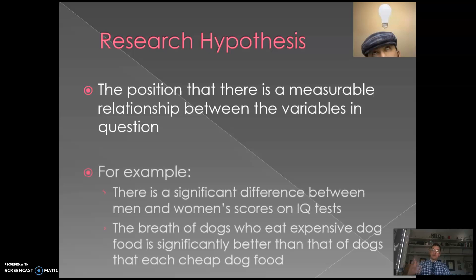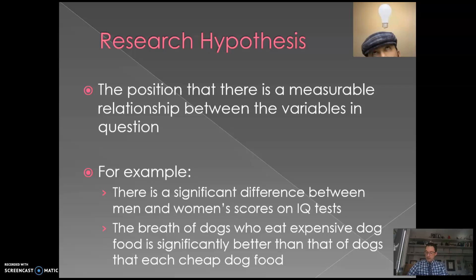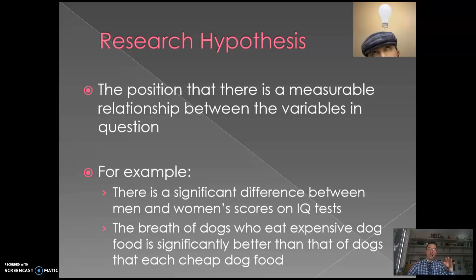For example, you might say there's a significant difference between men and women's scores on IQ tests — meaning biological sex does seem to have some impact on an individual's score on an IQ exam. This is actually a non-directional research hypothesis. You're not saying women will score higher or men will score higher — you're simply saying there's going to be a significant difference between the scores, but not specifying what kind.